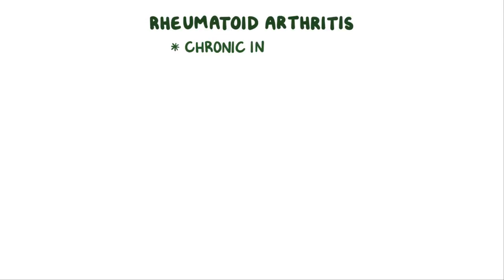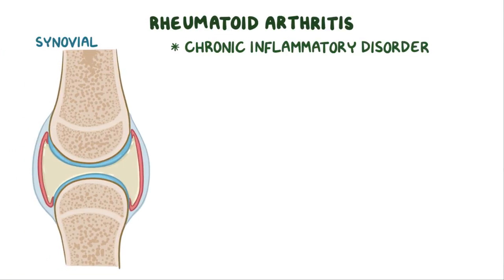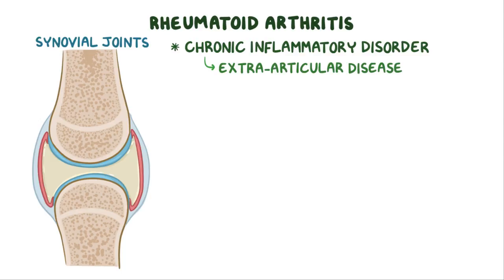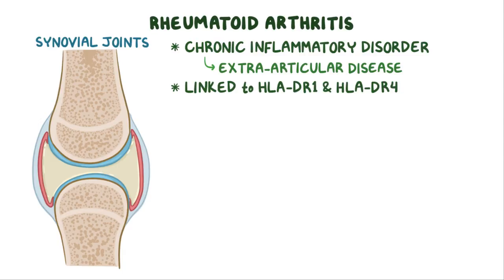Rheumatoid arthritis is a chronic inflammatory disorder that gradually affects synovial joints, but can also cause extra-articular disease as well. Rheumatoid arthritis has been linked to HLA-DR1 and HLA-DR4. Each time there's a flare, there's an increase in synovial and immune cells, and over time that results in a thick, swollen synovial membrane with granulation tissue, called a pannus.